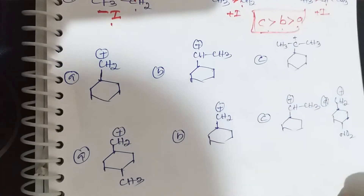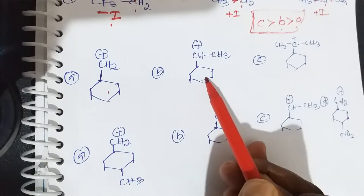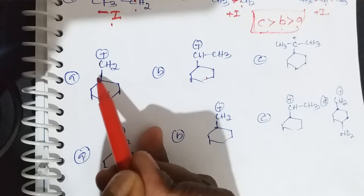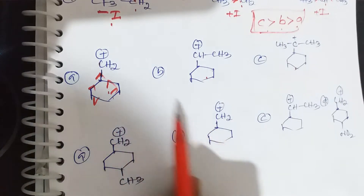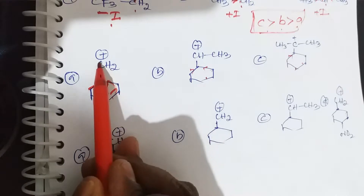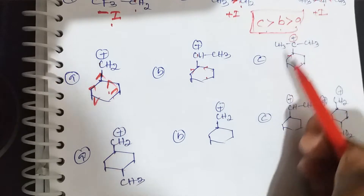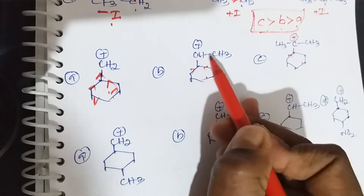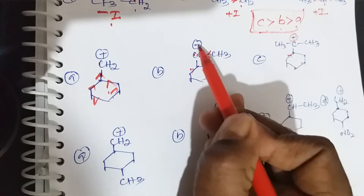Next example: all are cyclic (cyclohexane) groups. Cyclohexane is an electron releasing group. The first is primary carbocation, then secondary carbocation. CH2 is also an electron releasing group, so positive charge decreases in the secondary carbocation.